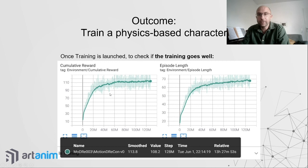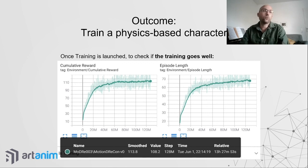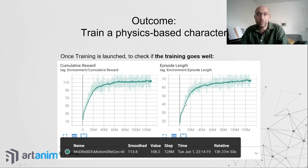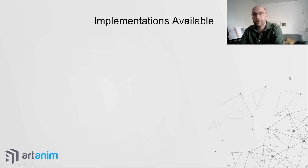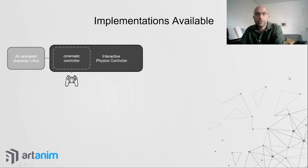Adjust the training setup, particularly the early termination criteria: when should an episode end and reset? If training is going well, the reward will increase — steeply at first, then leveling off — and episode length should follow a similar shape. A typical training using this project takes between 12 and 36 hours depending on your machine. If you're training for more than three days, something went wrong.